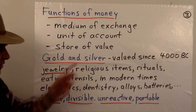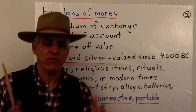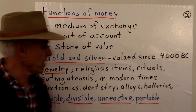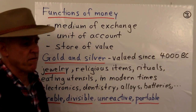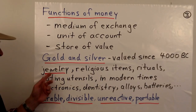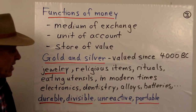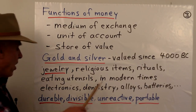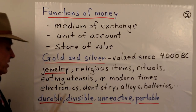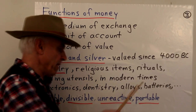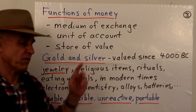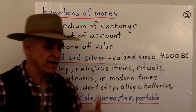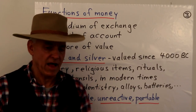Gold and silver were the main forms of money at the time I was a banker, and for thousands of years before that — valued since at least 4000 BC, primarily for jewelry but also for religious items, rituals, eating utensils made of silver. In modern times there are lots of industrial applications: electronics, dentistry, alloys, batteries, and many other things. Silver is especially important in industry. So there are lots of reasons why these two metals have been traditionally valued.